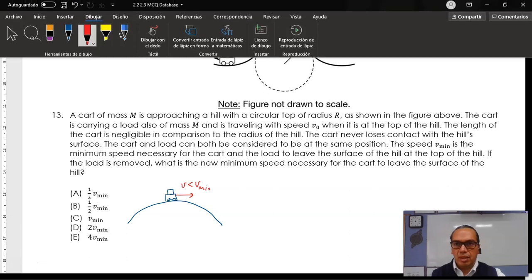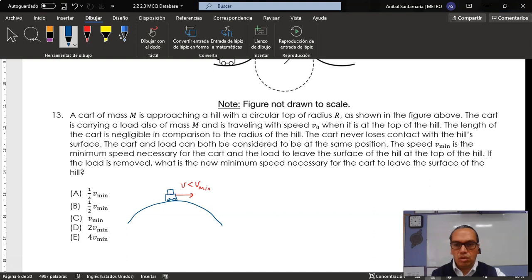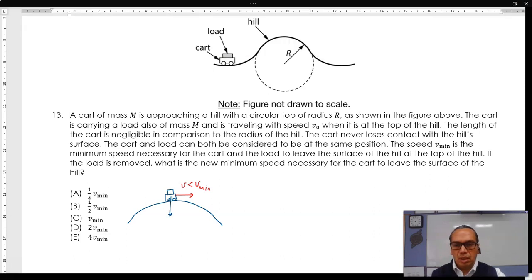In that case, what we have is that the net force on the cart and load system is equal to the vector combination of the gravitational force 2mg, because both have mass m and a normal force in such a way that the resultant of these two forces is equal to the net force, which is a centripetal force. And therefore, it is equal to 2m times the centripetal acceleration.